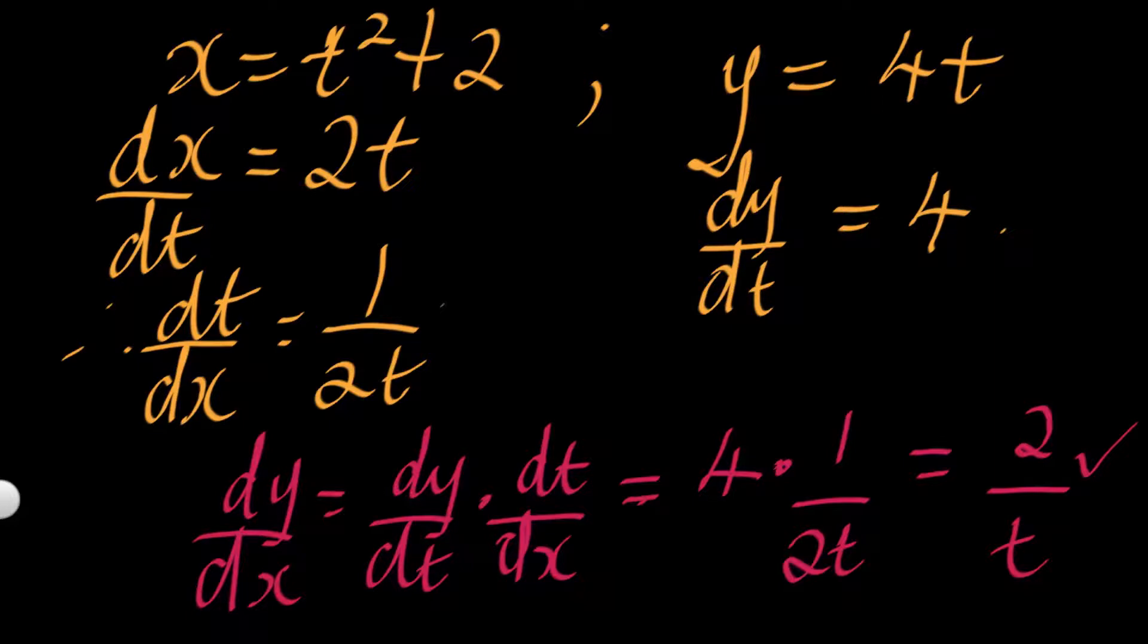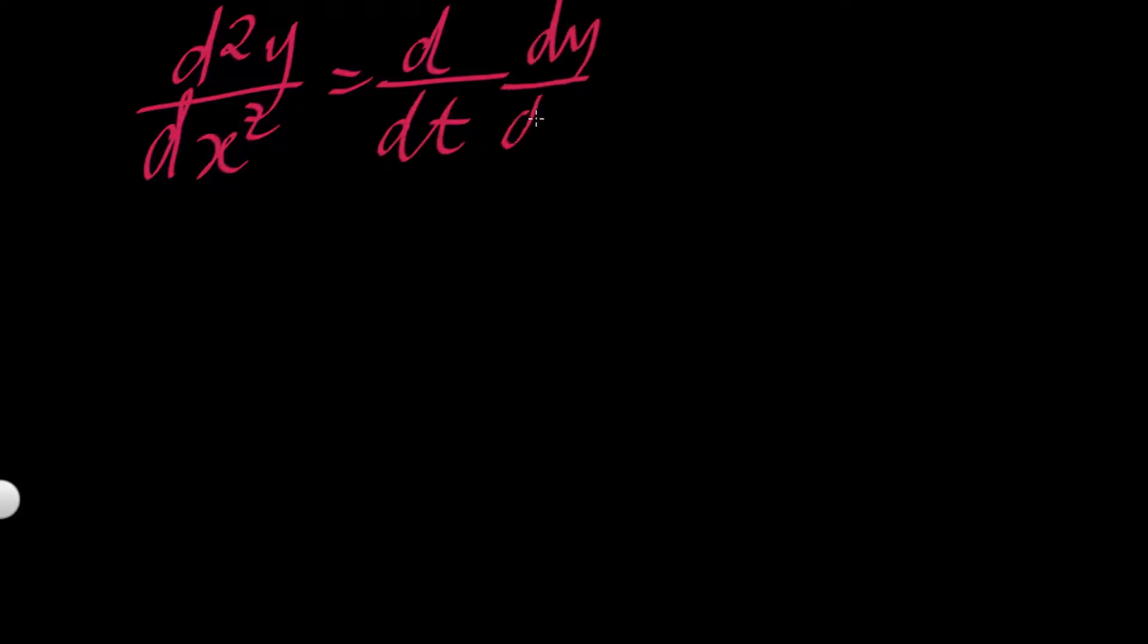So we're done with that part, we can now go to the second derivative. Our second derivative, let's write our formula so that we remain in the right direction. So it's d²y/dx² is equal to d/dt of dy/dx, this is being multiplied by dt/dx.